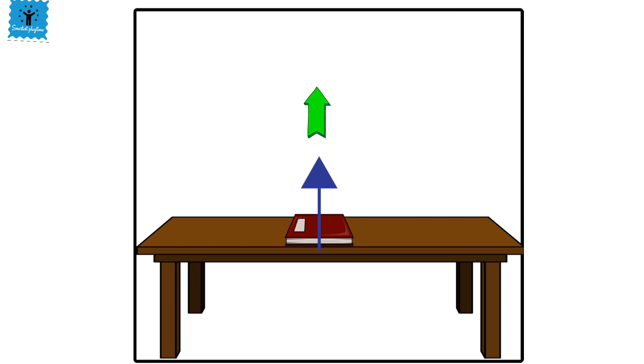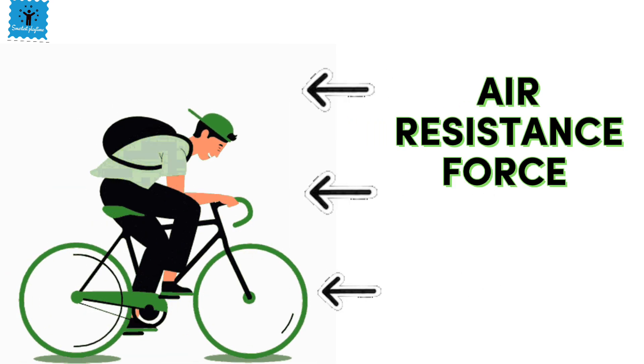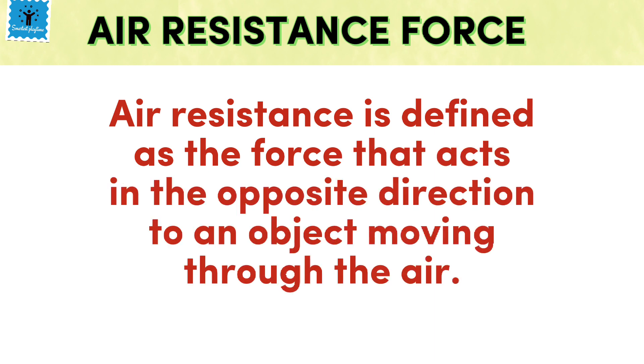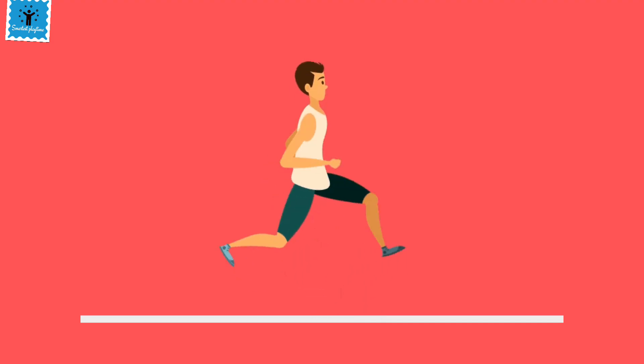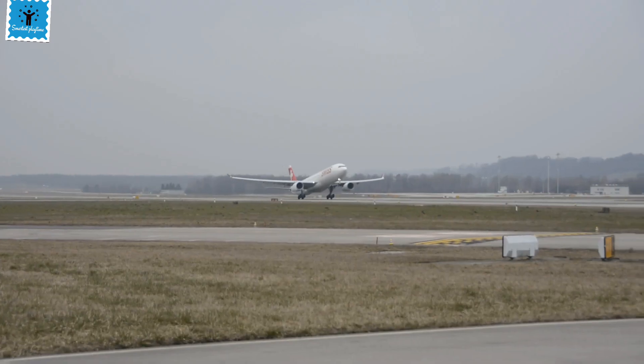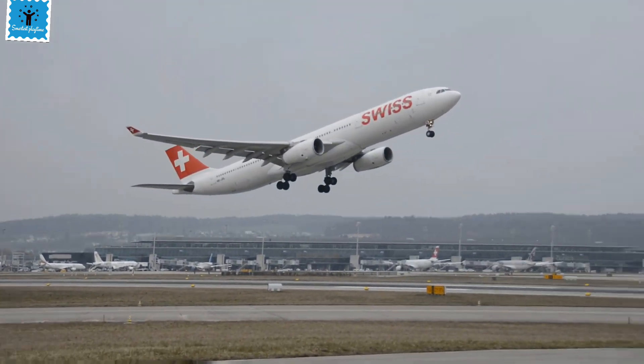The fifth category is air resistance force. It is a special type of frictional force that acts upon objects as they travel through the air. Like friction force, it also opposes the motion of an object. This force is usually weak and is often negligible and doesn't affect the speed of the object, but it becomes higher in objects that travel with higher speed.